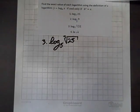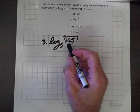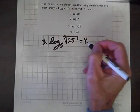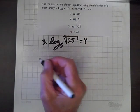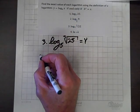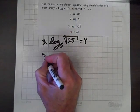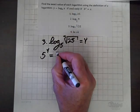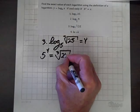Now, this time we're simplifying log to the base 5 of the cube root of 25, and we'll claim that equals y. Rewriting this in exponential form, we have 5 to the y power equals the cube root of 25.